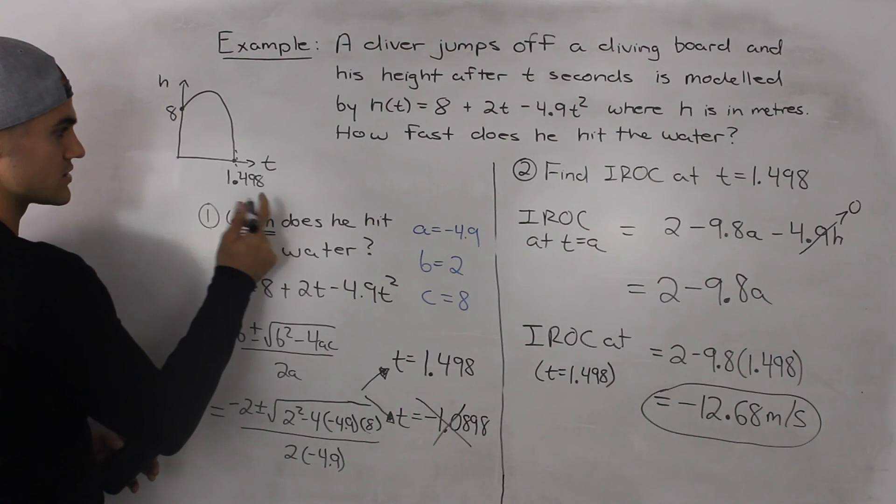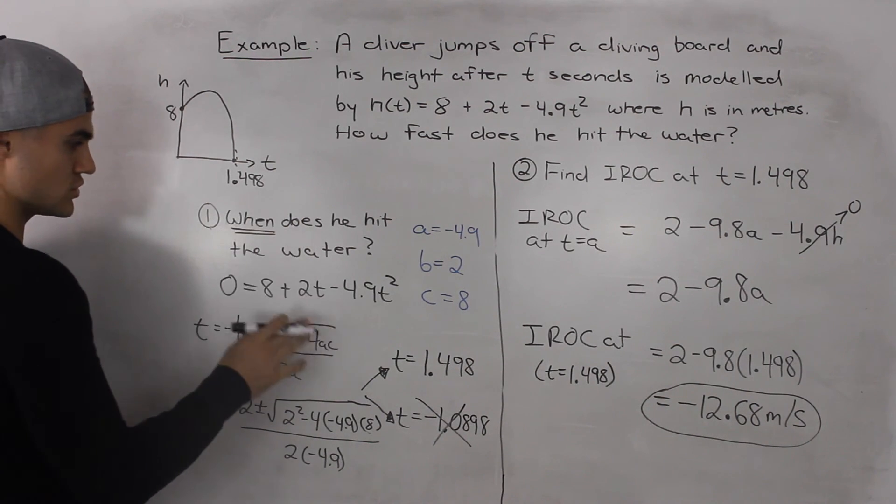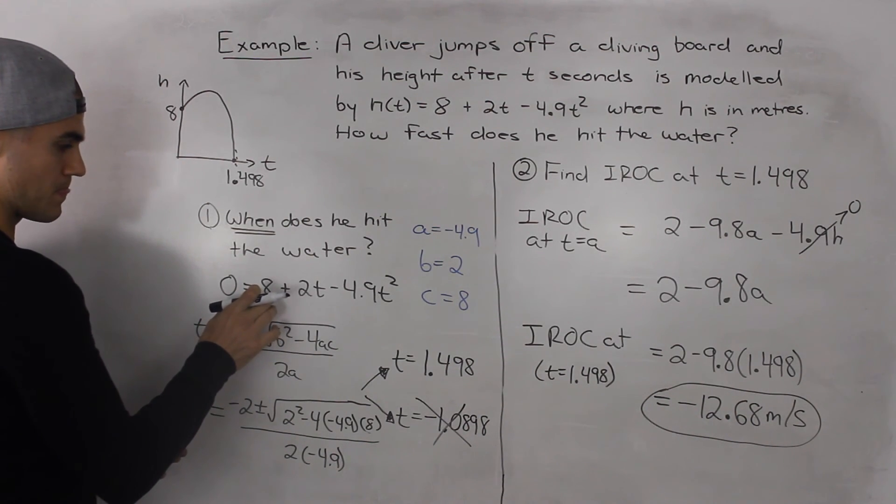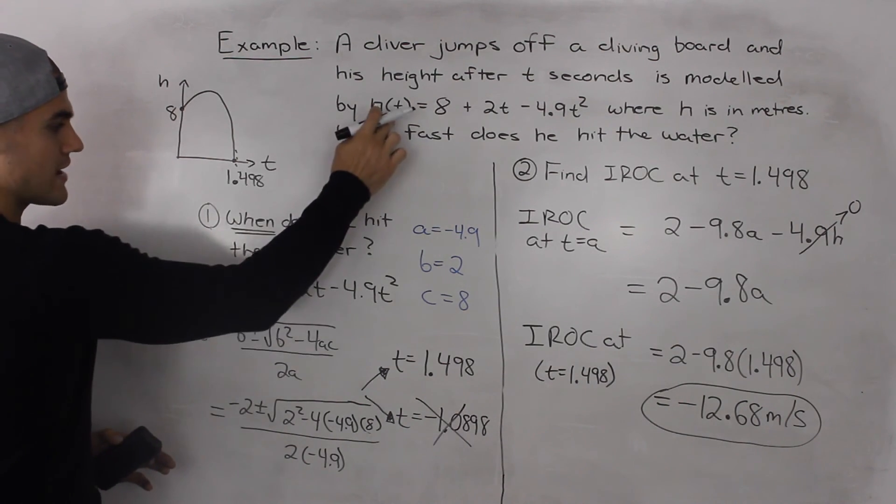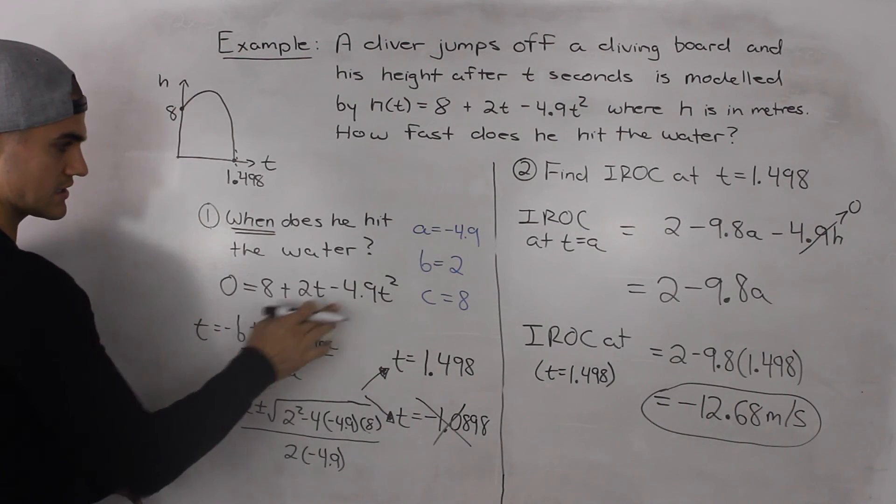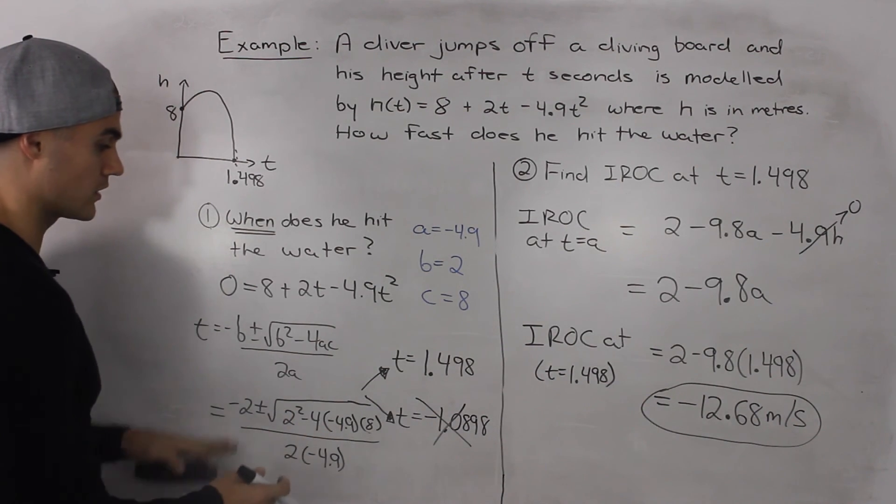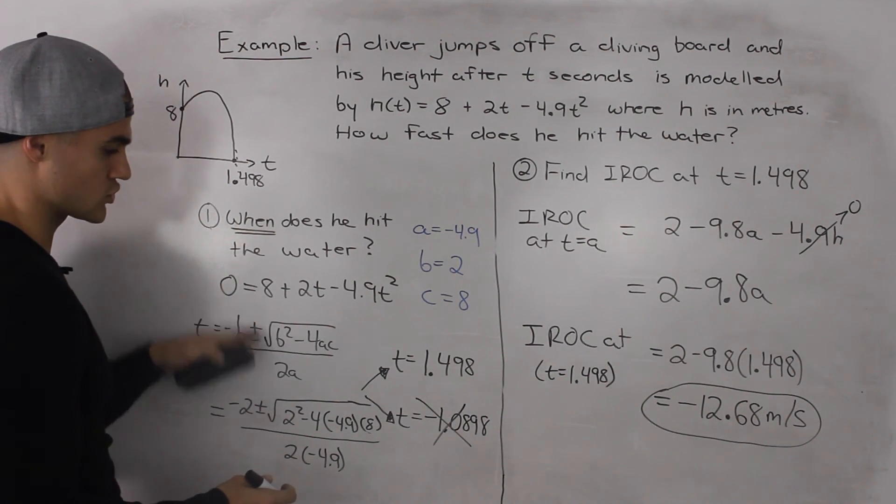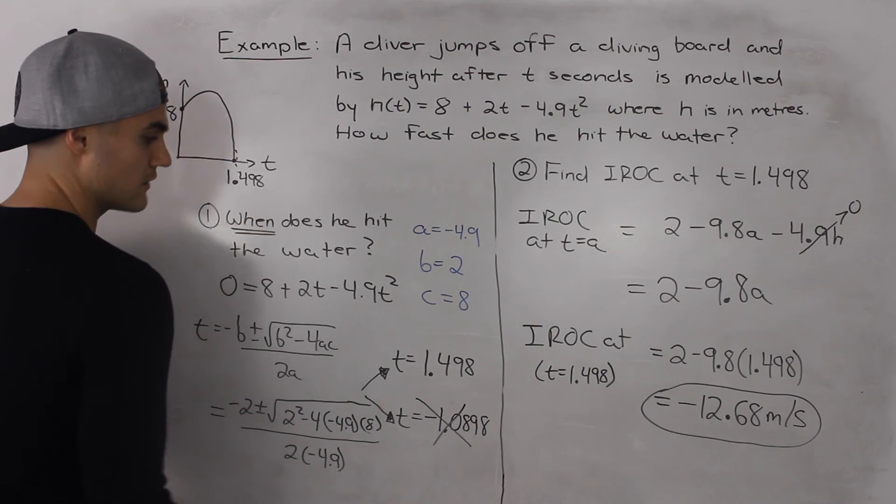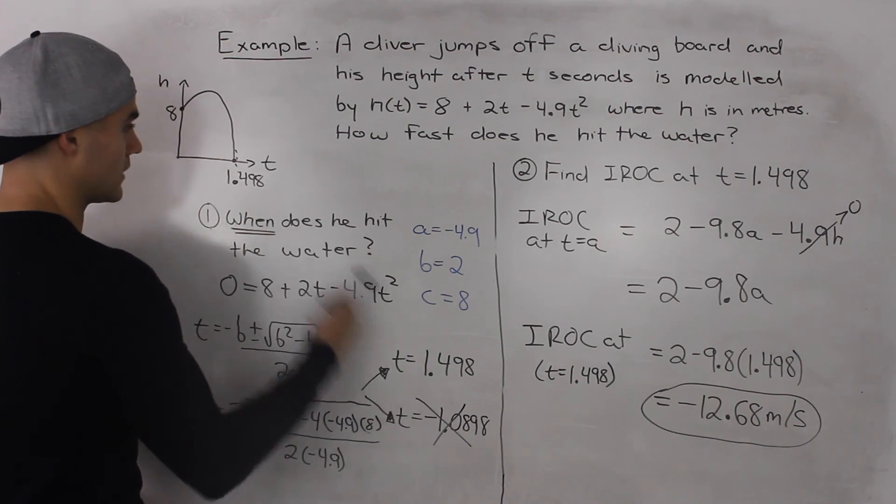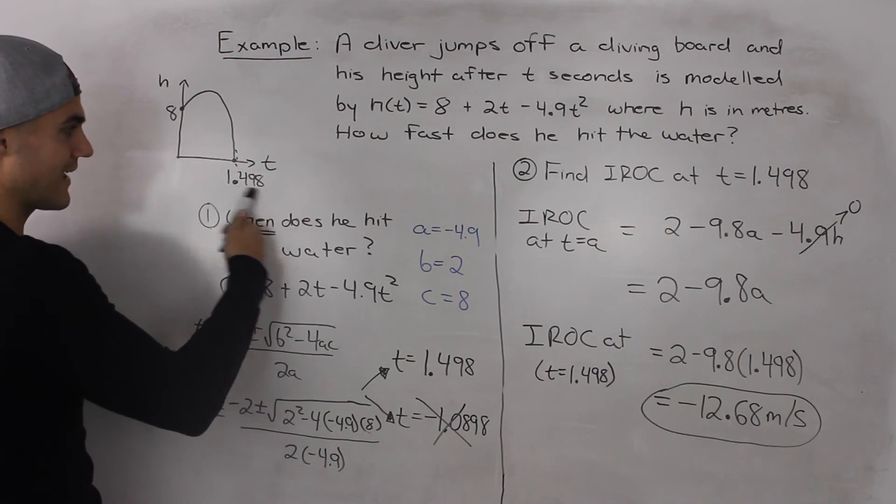So the first step is we have to find out when he hits the water. You usually do that by the quadratic equation because we have to plug in 0 for h. So solving for t since this is an ugly quadratic equation and usually you'll be given an ugly one, you'll have to use the quadratic formula. Any negatives you just disregard. So we found out he hits the water at 1.498 seconds.